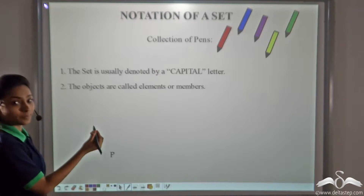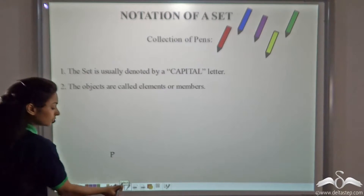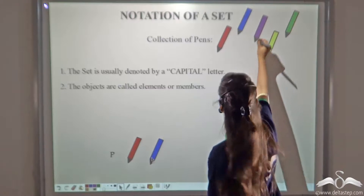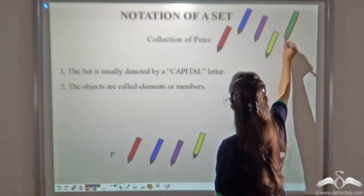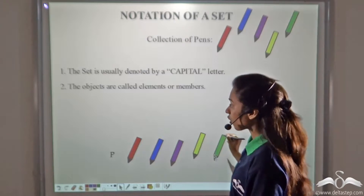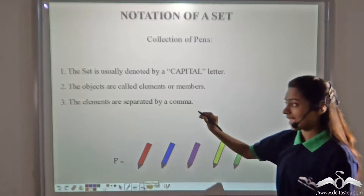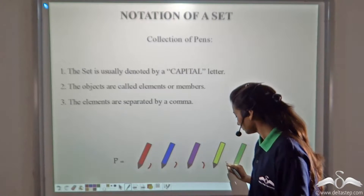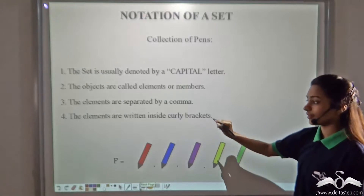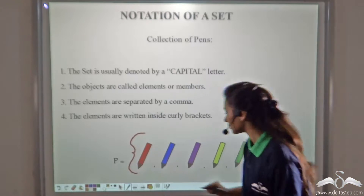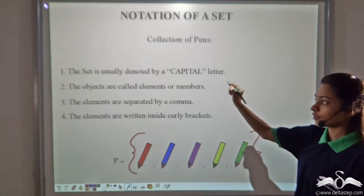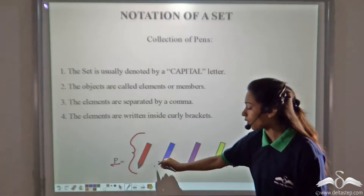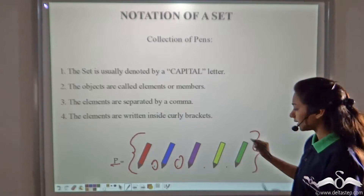The objects are called elements or members. So what are the elements or members here? These pens are the elements or members of the set P. The elements are separated by a comma, so we will not forget to put commas. The elements are written inside curly brackets, so we'll write these elements inside curly brackets.